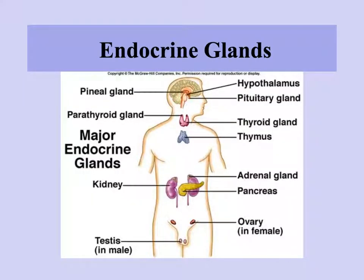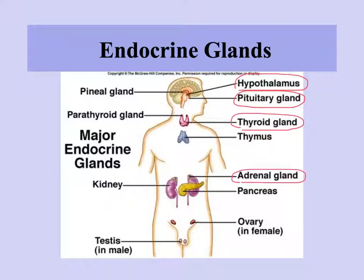The endocrine glands we'll focus on in this unit include the pituitary gland and the hypothalamus, the thyroid gland, the adrenal gland, the pancreas, and the parathyroid gland. We'll mention the pineal gland, the kidney, and the gonads — ovaries in women and testes in men — but those won't be covered in detail, nor will the thymus.